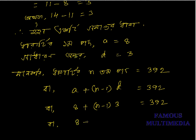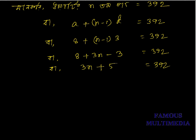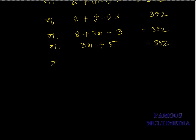And 8 plus 3 times n minus 1 equal to 392. So 3n minus 3 plus 8 equal to 392, but 3n plus 5 equal to 392. So 3n equals 392 minus 5.